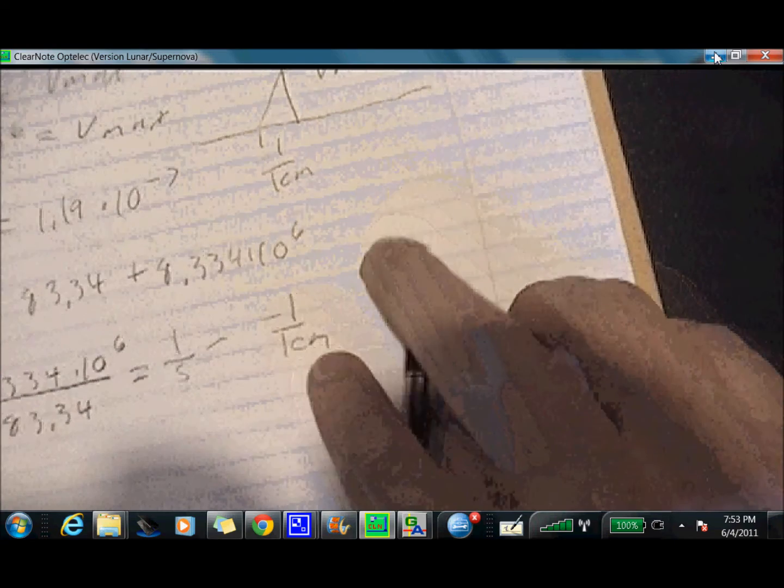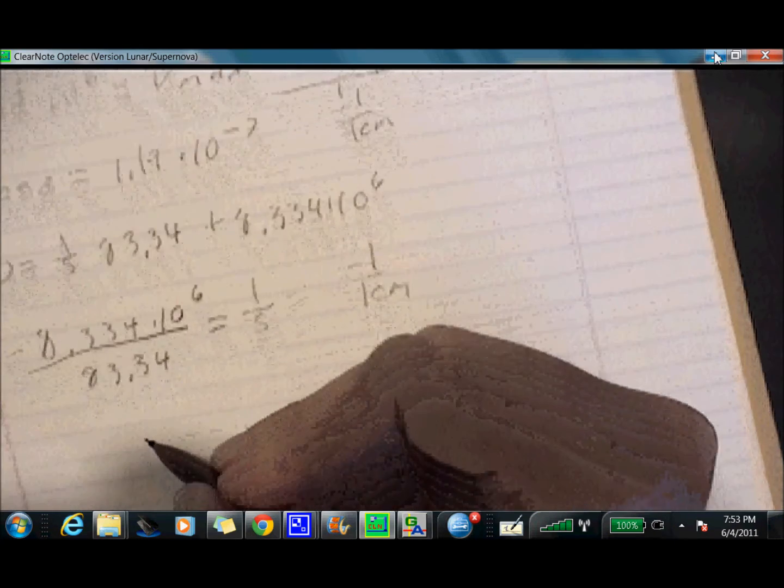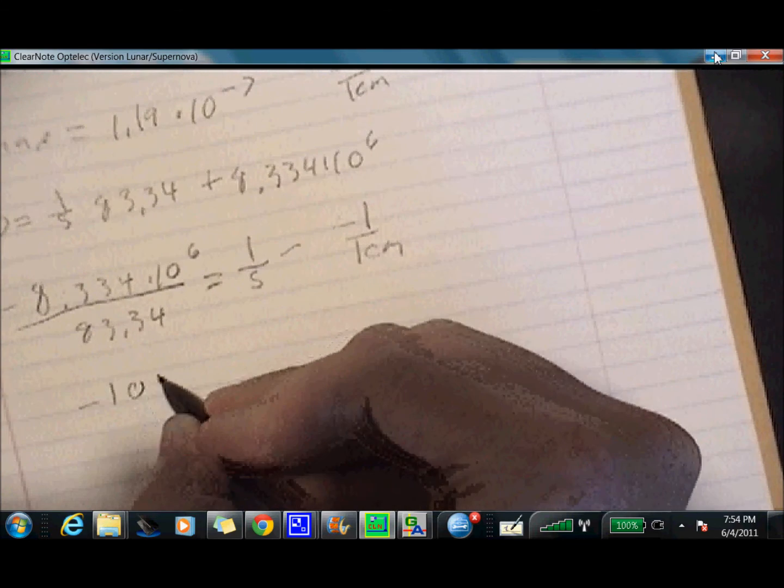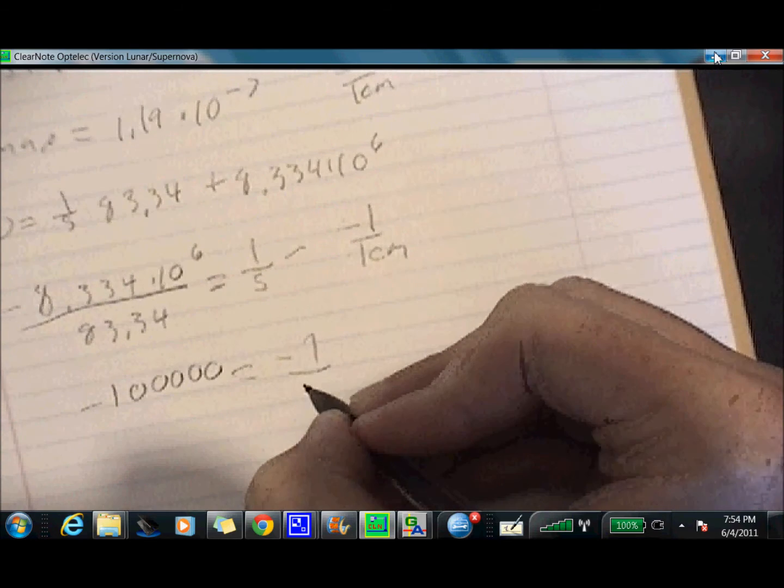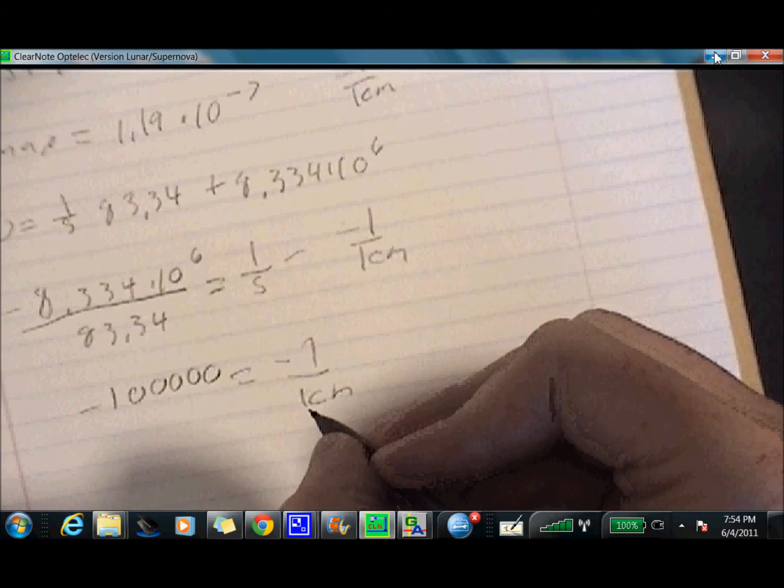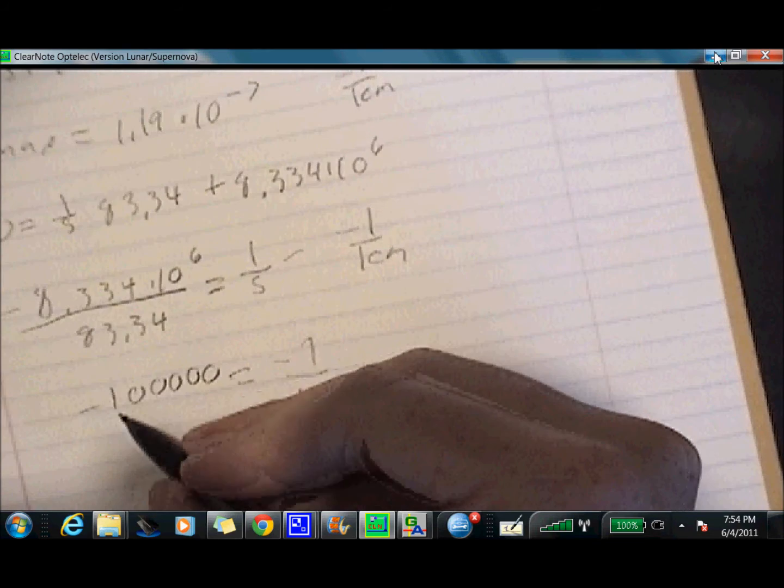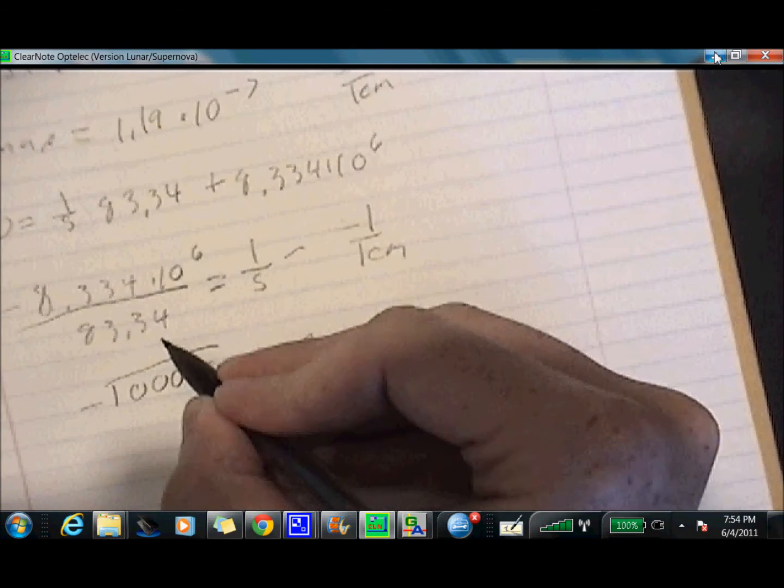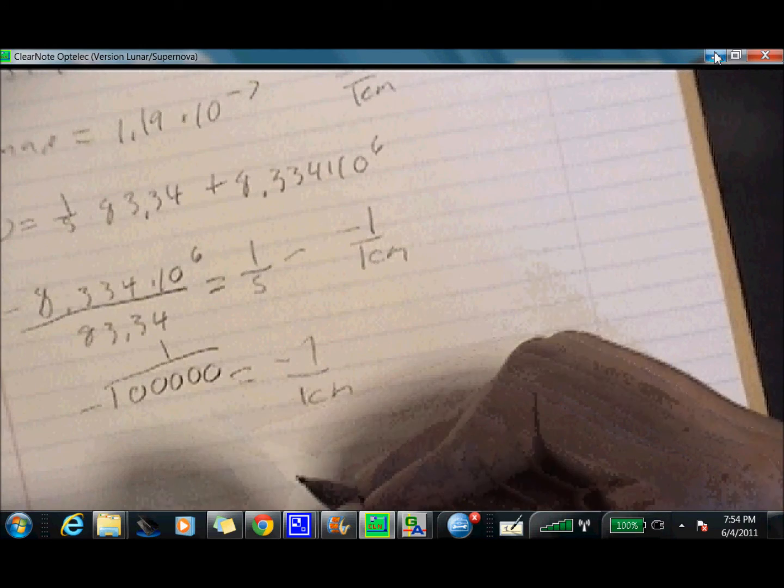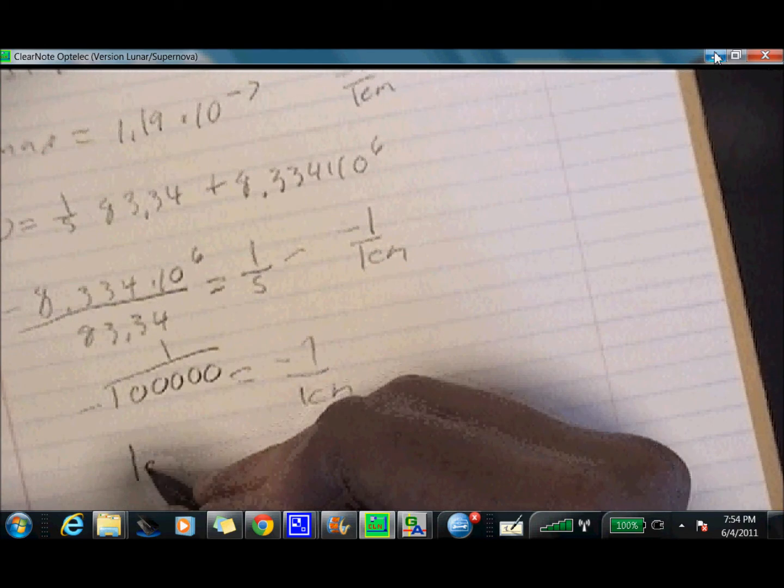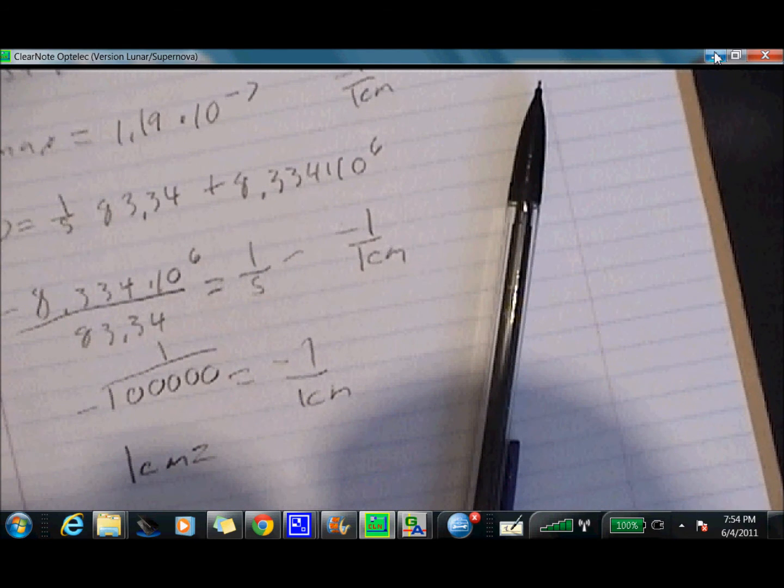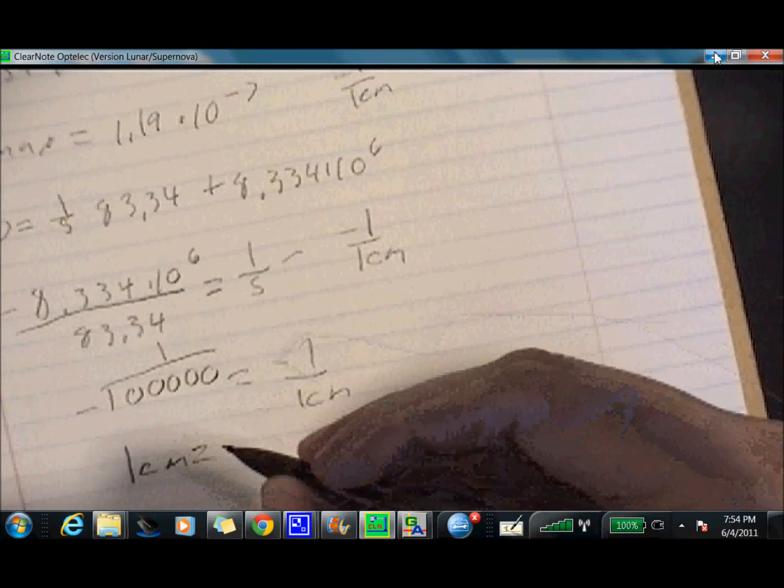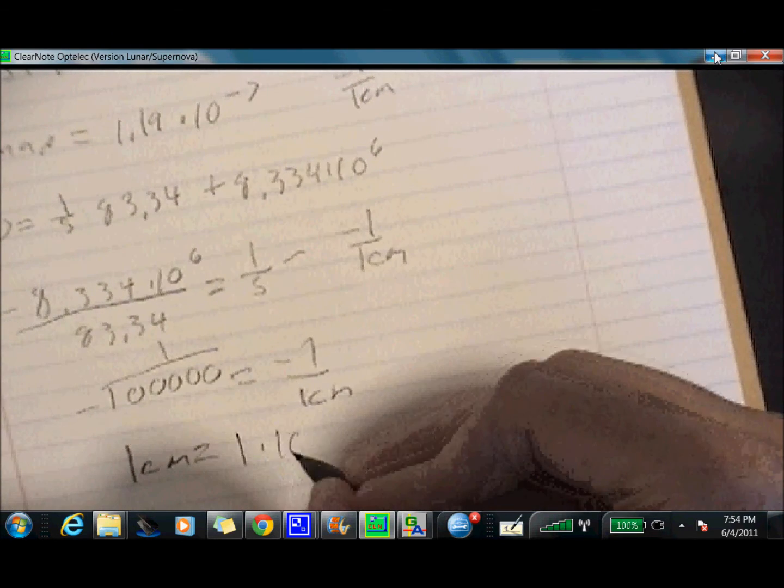So I'm getting 100,000. Negative, I'm sorry. I'm getting negative 100,000. Remember, again, this is negative one over KM. So in order to find our KM, we're going to multiply by negative one and have one divided by this. So the negative inverse of this number. So our KM is going to equal 1 times 10 to the negative 5th.